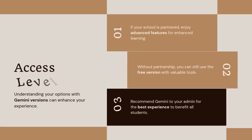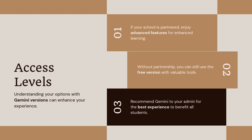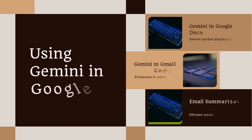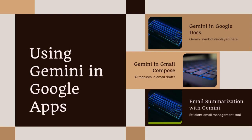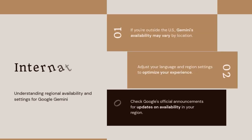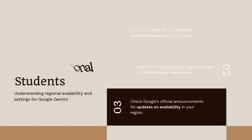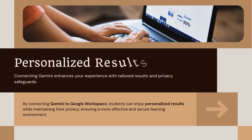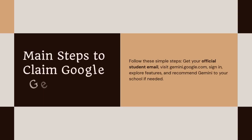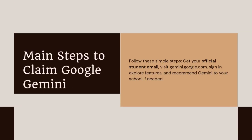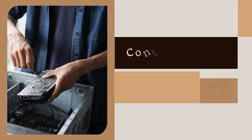Another thing to keep in mind: if you're outside the US, Google is still rolling out free student access region by region. So if you don't see the free plan yet, check back in a few weeks, or try switching your language and region settings to match your school's official location. For extra benefits, connect your Gemini account to Google Workspace for Students — that's the same account you use for Drive, Docs, and Meet. This lets Gemini personalize results for you based on your assignments or previous documents, but still keeps your data private under your school's security policies.